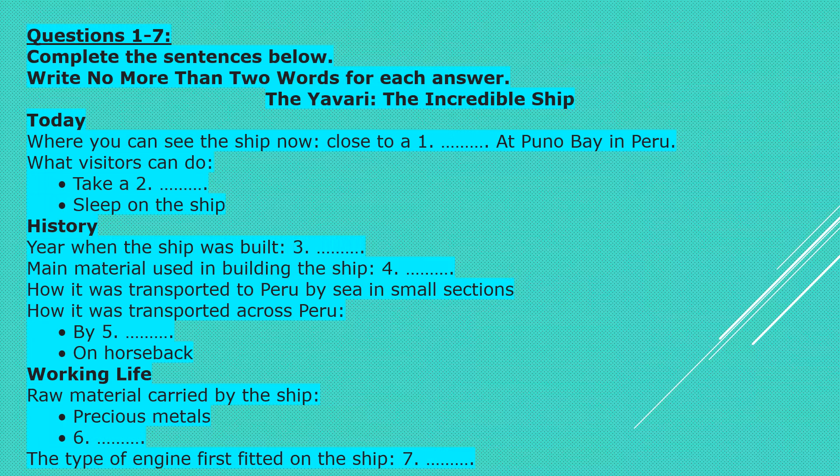Lake Titicaca is so high that no trees grow there and wood is not readily available. Even so, the ship was driven by a steam engine and needed a source of fuel until 1914, when a diesel engine was fitted.